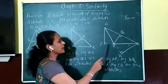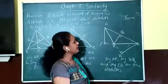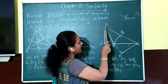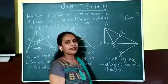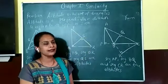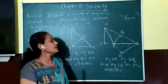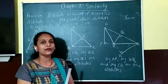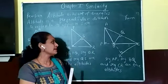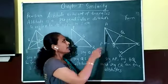Next, we move on to an obtuse angle triangle. If you see triangle ABC, it is an obtuse angle triangle. Now, just try to trace out where the three altitudes are.